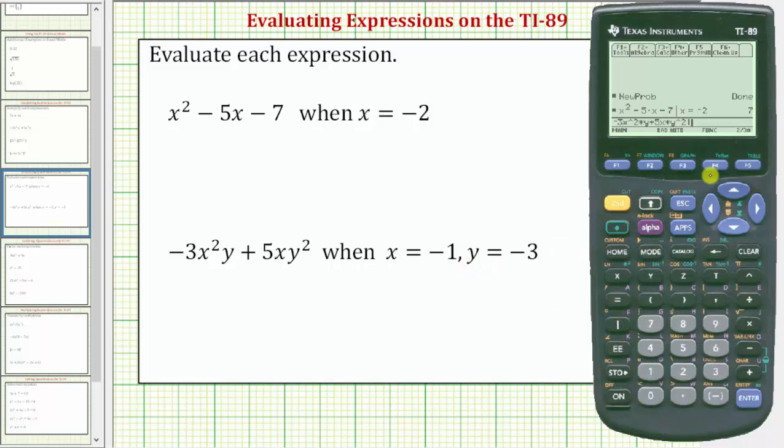Now we enter the vertical bar, and we need to enter x = -1, and y = -3. We do have to use the word and, not a comma, between these two values. So we'll enter x = -1.